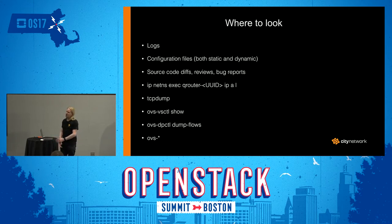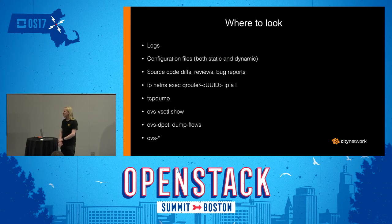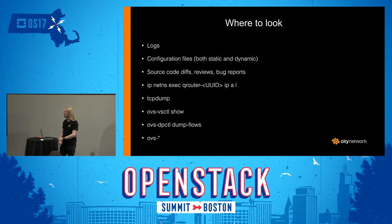You can also do TCP dumps inside the namespace. TCP dump is always your friend when you're doing network analysis of any kind. Also the OpenVSwitch commands — so ovs-vsctl show, for example, to see the ports and bridges that have been set up. Or ovs-dpctl dump-flows, where you can actually see the flows configured into OpenVSwitch. All the OVS commands are basically interesting and you should check them out and know what they do.